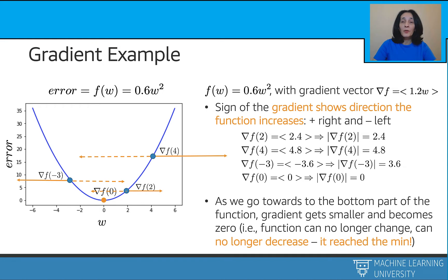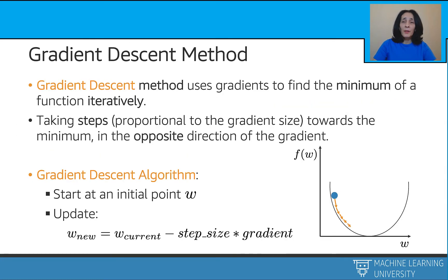Overall, moving in the opposite direction of the gradient for as many steps as needed is a good strategy to reach the minimum. This is the gradient descent method: it uses gradients to find a minimum iteratively, taking steps proportional to the gradient size in the opposite direction of the gradient towards the minimum. The gradient descent algorithm starts from any initial point W, assumed not at the minimum, and updates W by steps in the opposite direction of the gradient. The size of the update is controlled by the step size parameter, also known in machine learning as the learning rate.